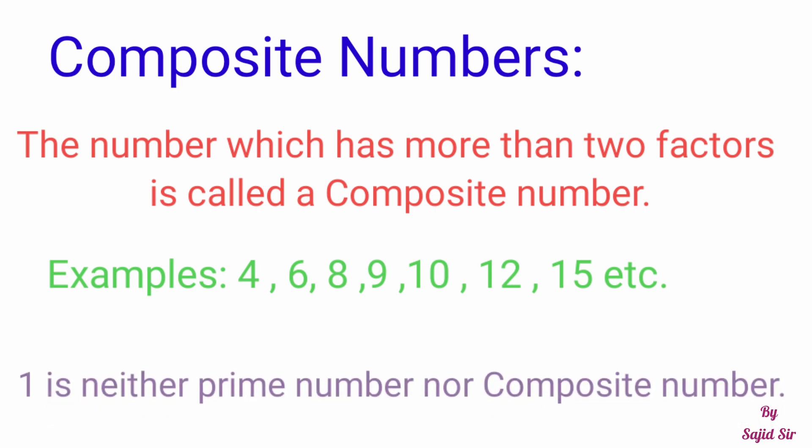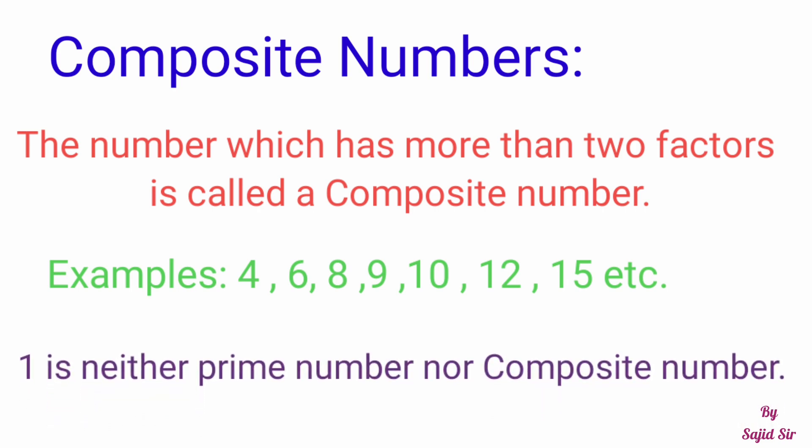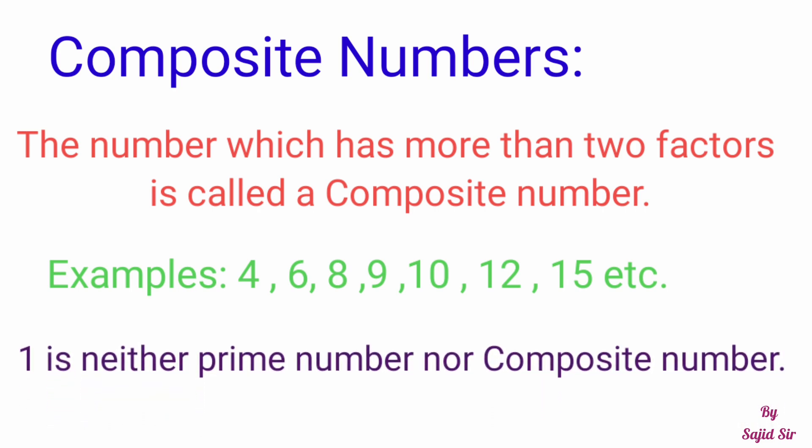1 is neither a prime number nor a composite number. 1 ना तो prime number है और ना ही composite number होता है।